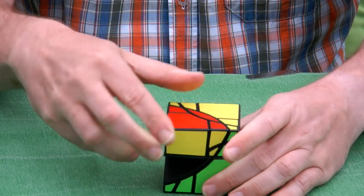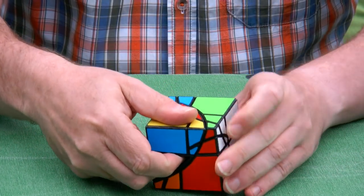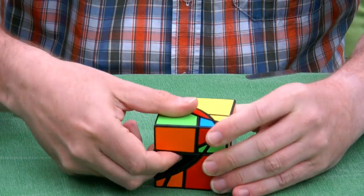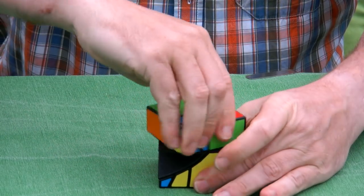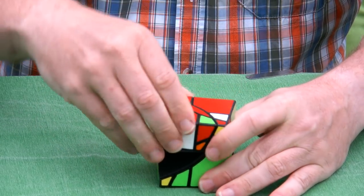We turn the backside, then we turn the top by 180 degrees. We turn the backside again, then the top again. We turn the backside in the other direction, then the top again. We turn the backside again, then the top again.